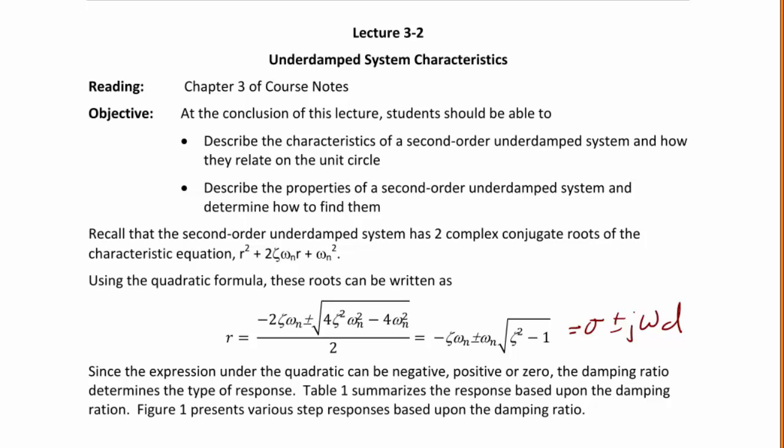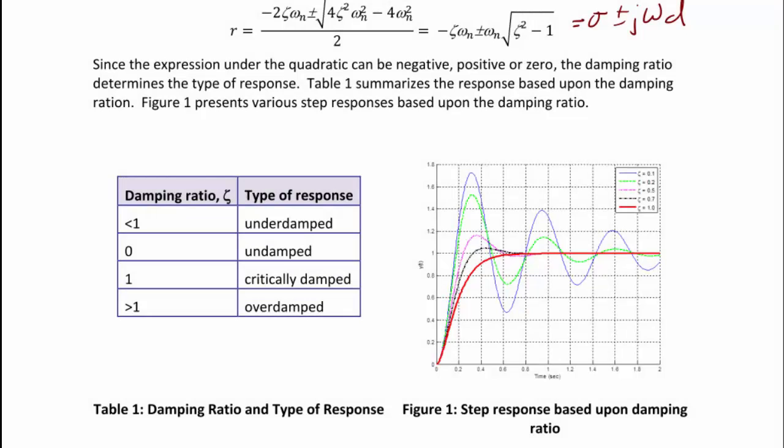Since the expression under the quadratic can be negative, positive, or zero, which indicates the type of roots, the damping ratio determines the type of response. Table 1 summarizes the response based upon the damping ratio. Recall: ζ < 1 is underdamped, ζ = 0 is undamped, ζ = 1 is critically damped, and ζ > 1 is overdamped.